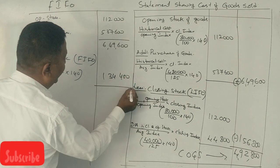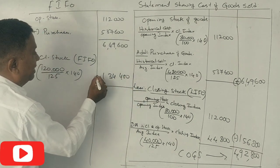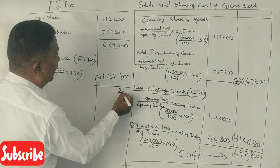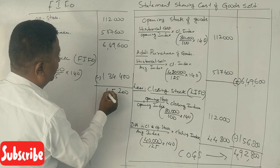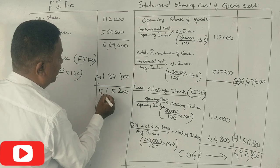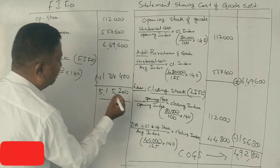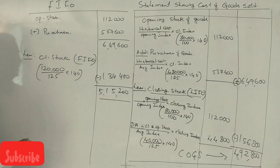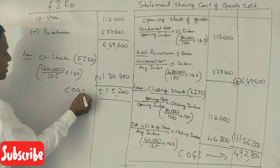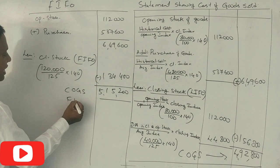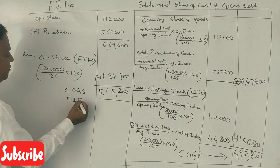1,20,000 divided by 125 multiplied by 1,40,000 — only like 1,34,400. This gives the cost of goods sold under the LIFO method.